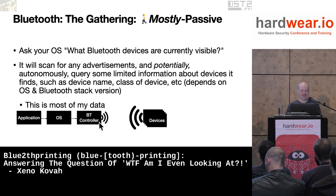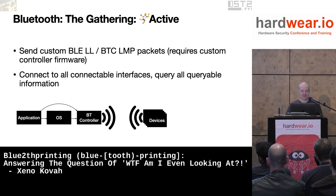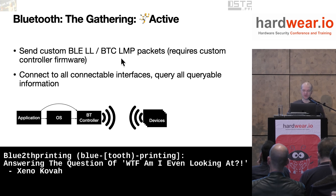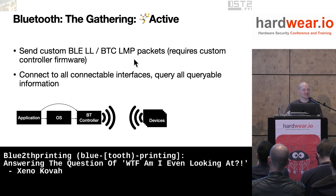Once we get into more active tooth printing, this is where we start getting into stuff that may be considered suspicious. This is where you start sending custom low-level packets — Bluetooth link layer or Bluetooth Classic link management protocol packets. You custom-craft these packets and throw them at devices. That bag right now is whipping packets at all your Bluetooth devices saying 'what are you?' and just trying to figure it out.